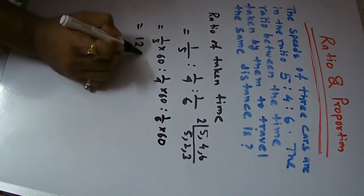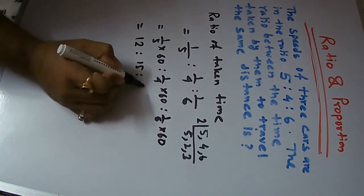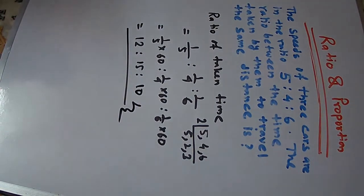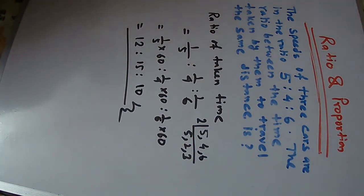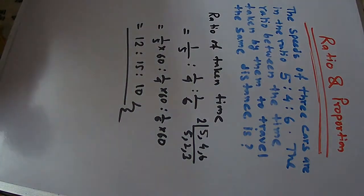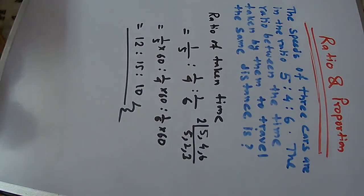The answer is 12 is to 15 is to 10. The time ratio is 12:15:10. If you have any questions, please leave them in the comments.